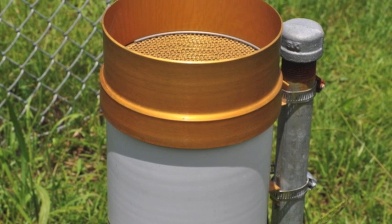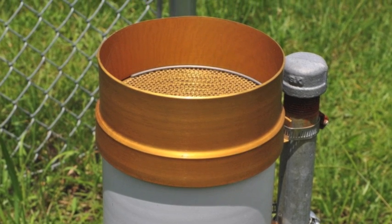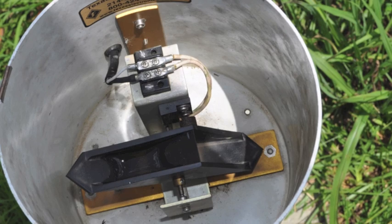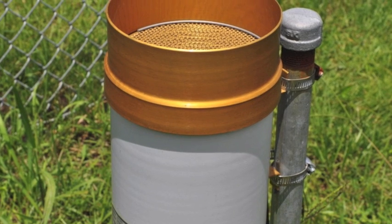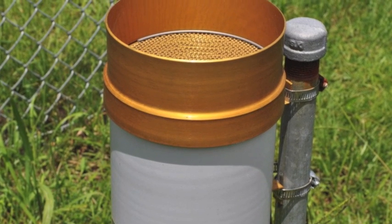The TE gauge serves as the backup gauge in case the TB3 breaks down. It functions the same with the exception of quality. Like I mentioned previously, the TB3 has a siphon which allows it to measure the rainfall more accurately.